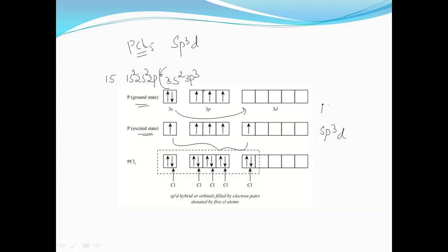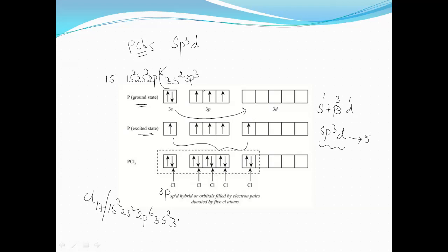The 1s, 3p, and 1d orbitals participate in hybridization, resulting in five sp3d hybrid orbitals. These sp3d hybrid orbitals then overlap with the 3p orbitals of the chlorine atoms.